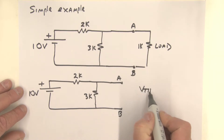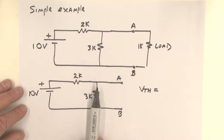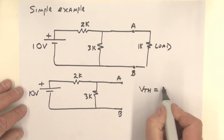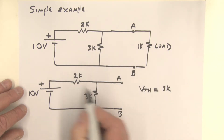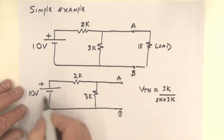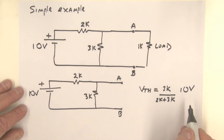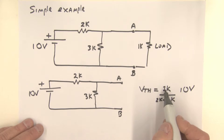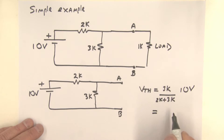V-Thevenin is equal to the voltage across the 3K resistor, and in this case it's a simple voltage divider. So it's 3K divided by the sum of the two — 2K plus 3K — multiplied by 10 volts. Working this out: 3K over 5K times 10, which is 3 over 5 times 10, giving us a voltage equal to 6 volts.